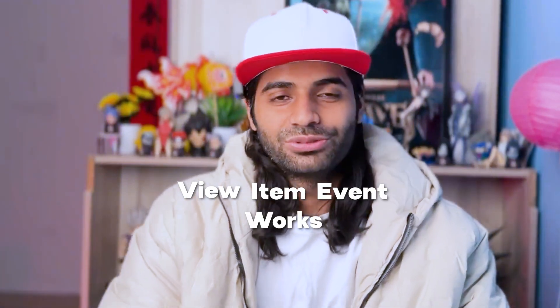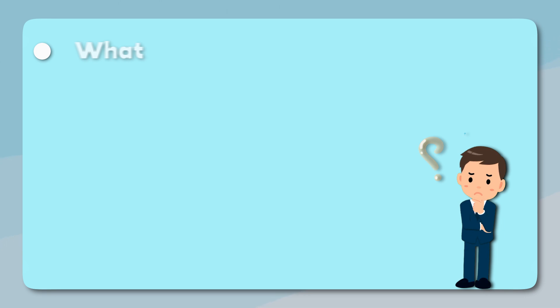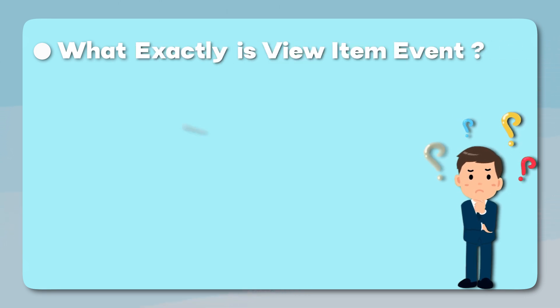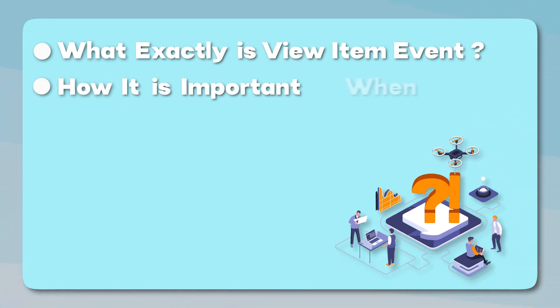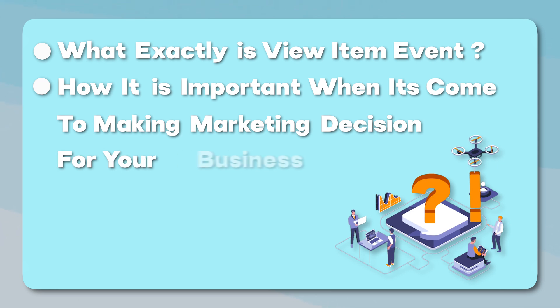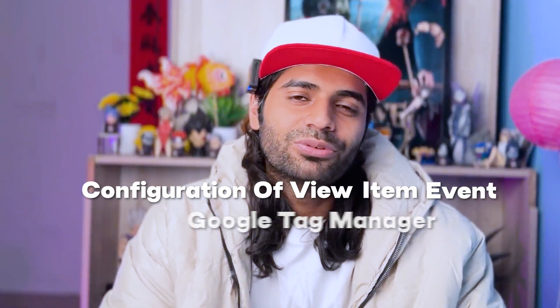In this second video we are going to see how the view item event works. The video is divided into three sections. In the first section we'll cover what the view item event is and why it matters for marketing decisions. We'll look at reports in GA4. Then in the second section we'll configure the view item event in Google Tag Manager, and the third section covers potential issues.